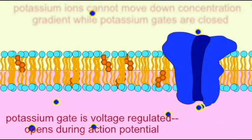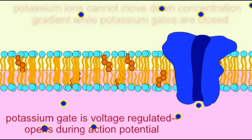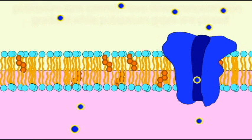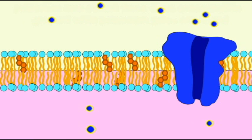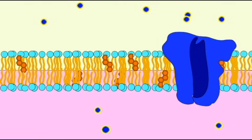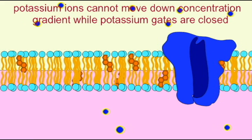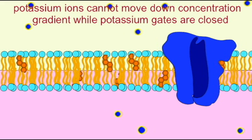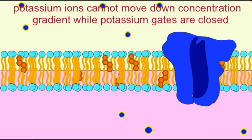As the voltage difference across the cell membrane changes again after the action potential, these gates close. These potassium gates are voltage regulated, and only when they are open does potassium have the ability to go from an area of high concentration inside the cell to an area of lower concentration outside the cell.